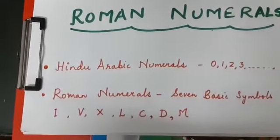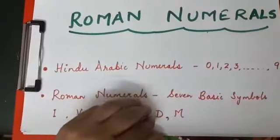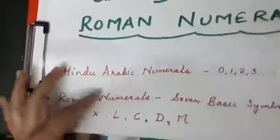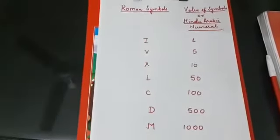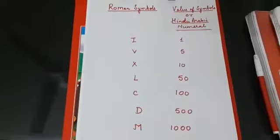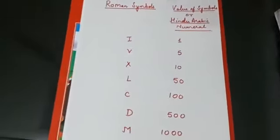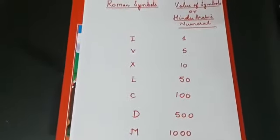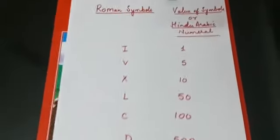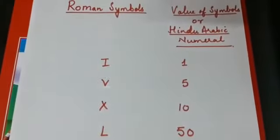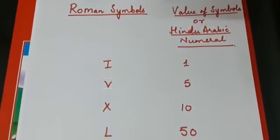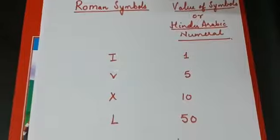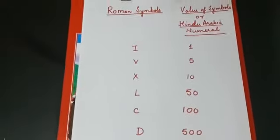Now let me show you what these seven symbols represent. Now these seven symbols I am showing now. These represent Roman symbols. In one table, one column I have written Roman symbols and in the other one I have written the Hindu Arabic numerals. That is also called value of the symbols so that you know what is the value of these symbols.